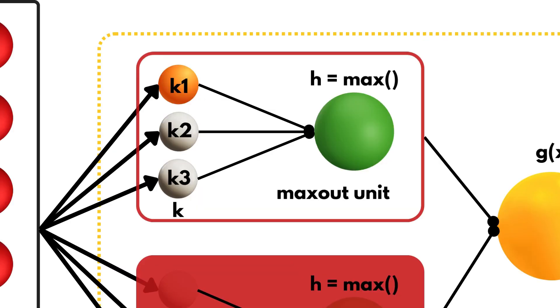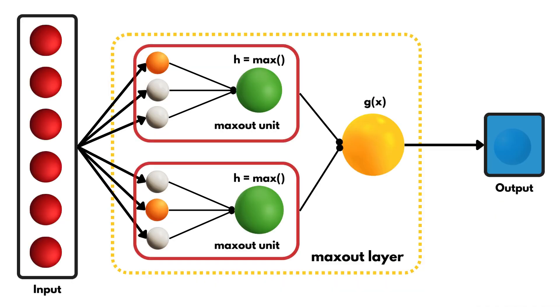Within these maxout units is k neurons, k equal 3 in this particular case, all connected to a neuron that will take the maximum of their value. You might be wondering, where is the non-linearity here? It's within the maximum operation. We'll see why in a few. Each of these k neurons has their own set of learnable weights, meaning they are learning different linear functions. This means that for any given input combination, only one number is output from the maxout unit, corresponding to the highest activation from its k neurons.